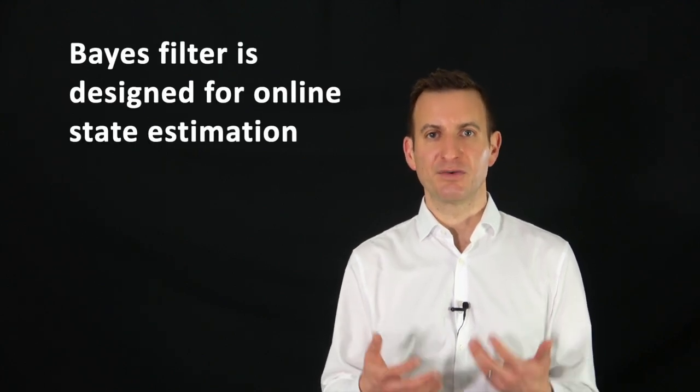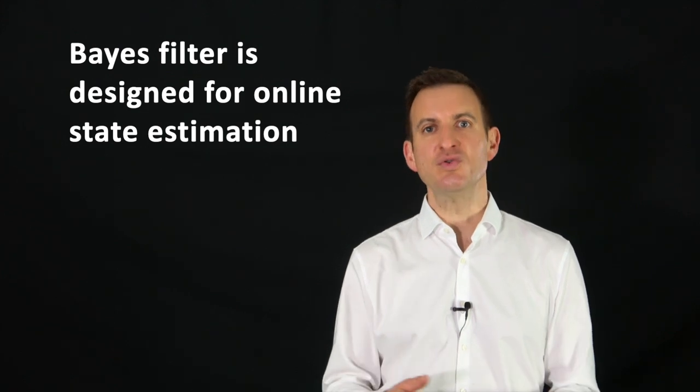For that, the Bayes filter is the most prominent tool to use. You find it in basically all robot navigation stacks. You will find it in all systems that use autonomous cars. GPS systems used to be a Kalman filter, also a realization of the recursive Bayes filter in order to perform state estimation. So Bayes filters are everywhere and it's important to understand what they are doing.